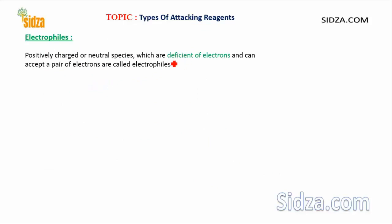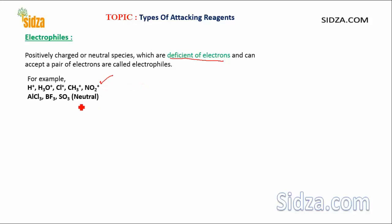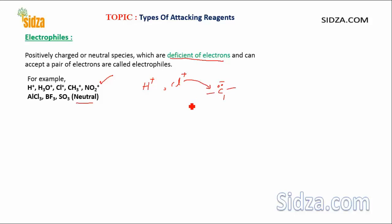Electrophiles are electron-deficient species. Most electrophiles are either positively charged or they can also be neutral. For example, H+ can act as an electrophile, and Cl+ can also act as an electrophile because these are electron-deficient. All these electron-deficient centers will attack on a molecule which is electron-rich, meaning a carbon with a negative charge will be under attack by the electrophile.